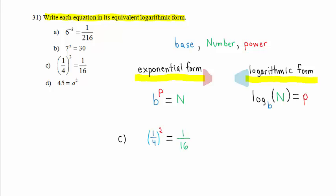Let's look at Part C. One-fourth to the 2nd power equals 1 over 16. In logarithmic form, we have log base one-fourth of N, which is one-sixteenth, equals the power 2. Thus, the equivalent logarithmic form or logarithmic equation is log base one-fourth of one-sixteenth equals 2.